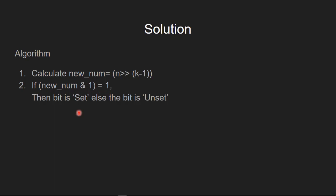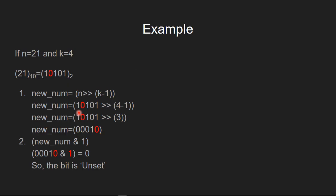Let's understand this using an example. If n equals 21 and k equals 4, this is the binary representation of 21, and we are interested in finding out whether the fourth bit, which is the highlighted bit, is set or not. So in the first step, we right shift n by k minus 1 positions, that is 3 positions.